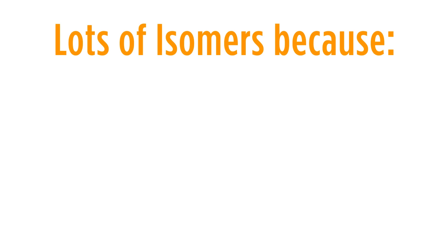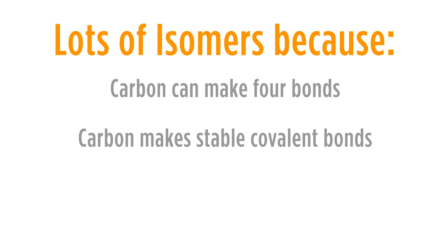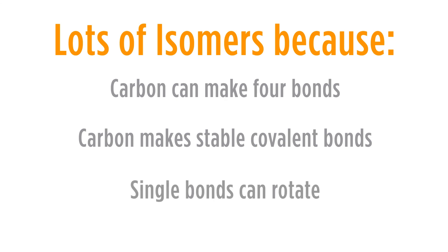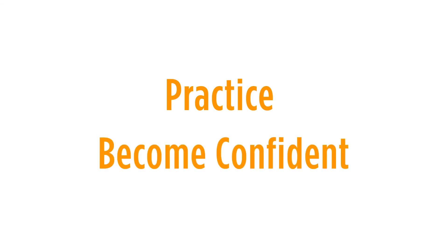There are lots of isomers in organic chemistry. Carbon can make four bonds and it makes very stable covalent bonds — because of that, there are lots of different isomers. Some of them are easy to recognize by just trying to name the molecule, which almost always works, and others by just being observant. As you can see in the diastereomers, conformations, and cis-trans isomers, it is also important to understand that you cannot rotate a double bond but you can rotate a single bond. Practice recognizing isomers and become confident.